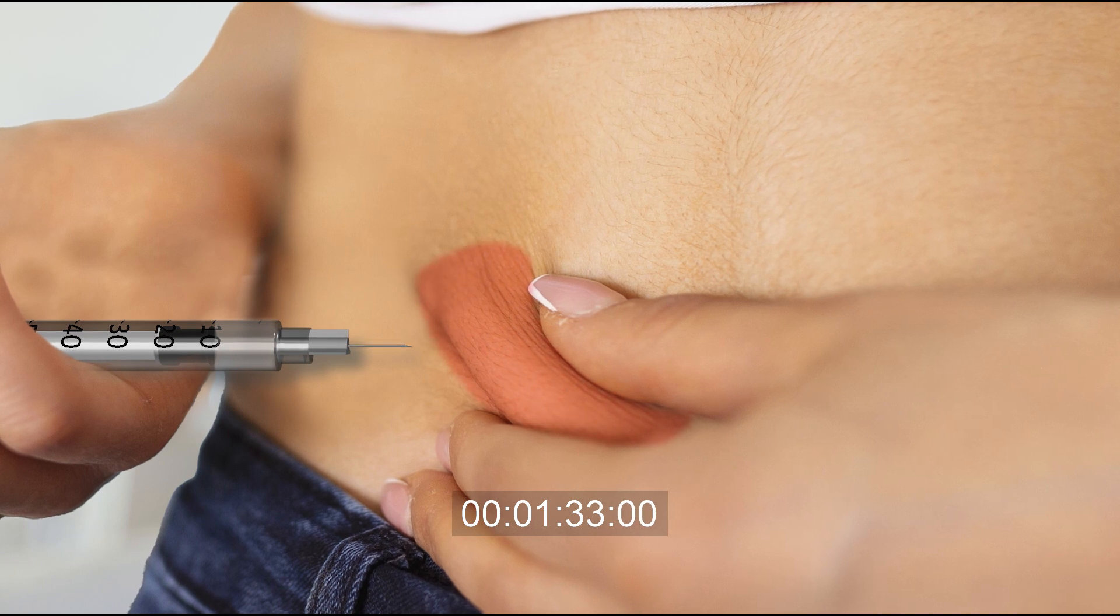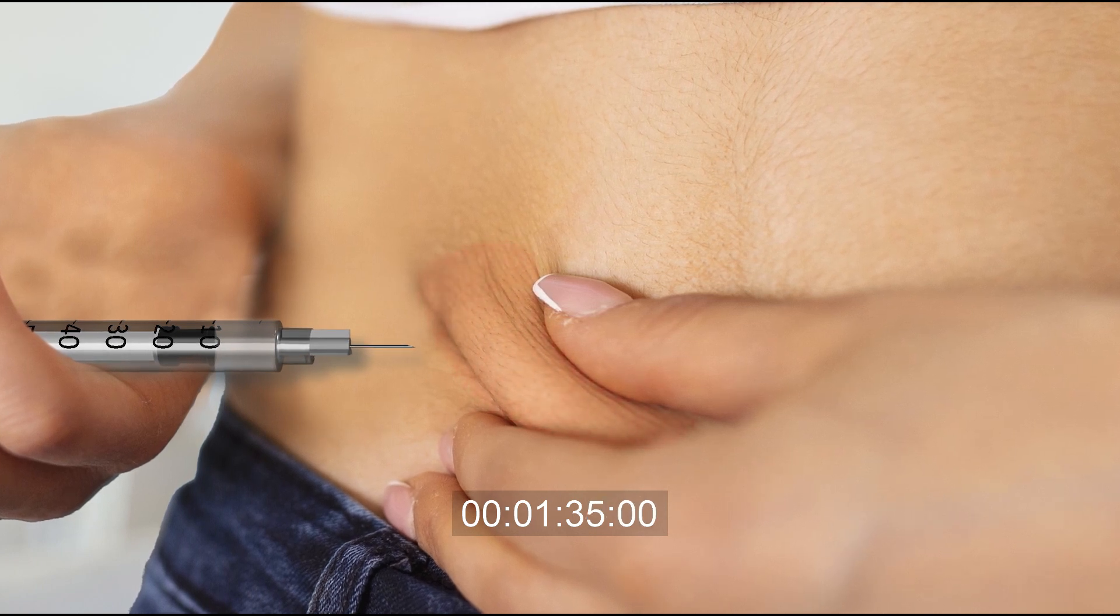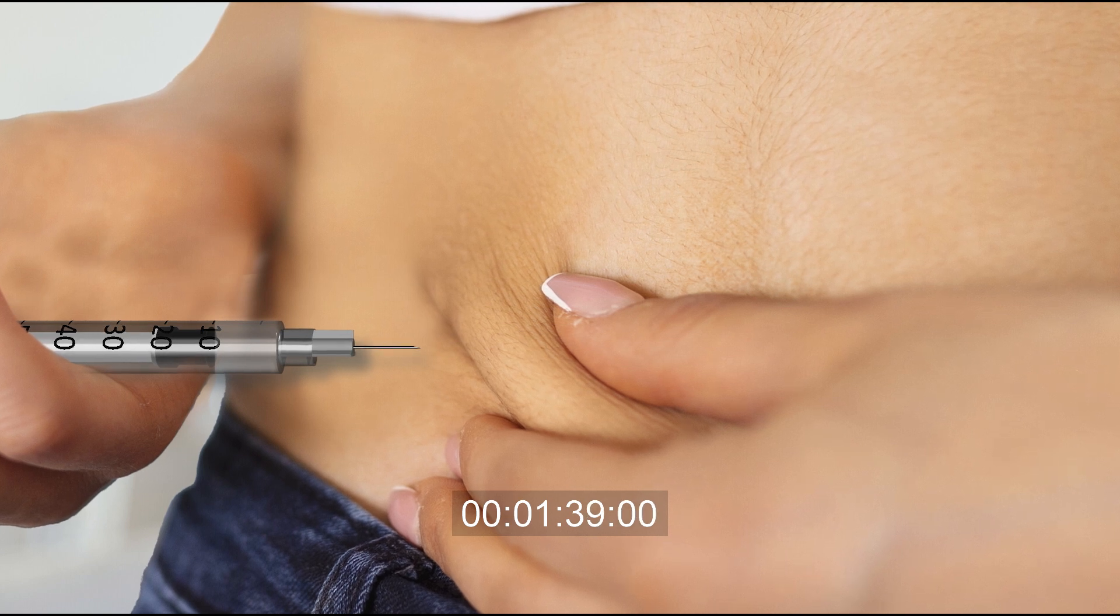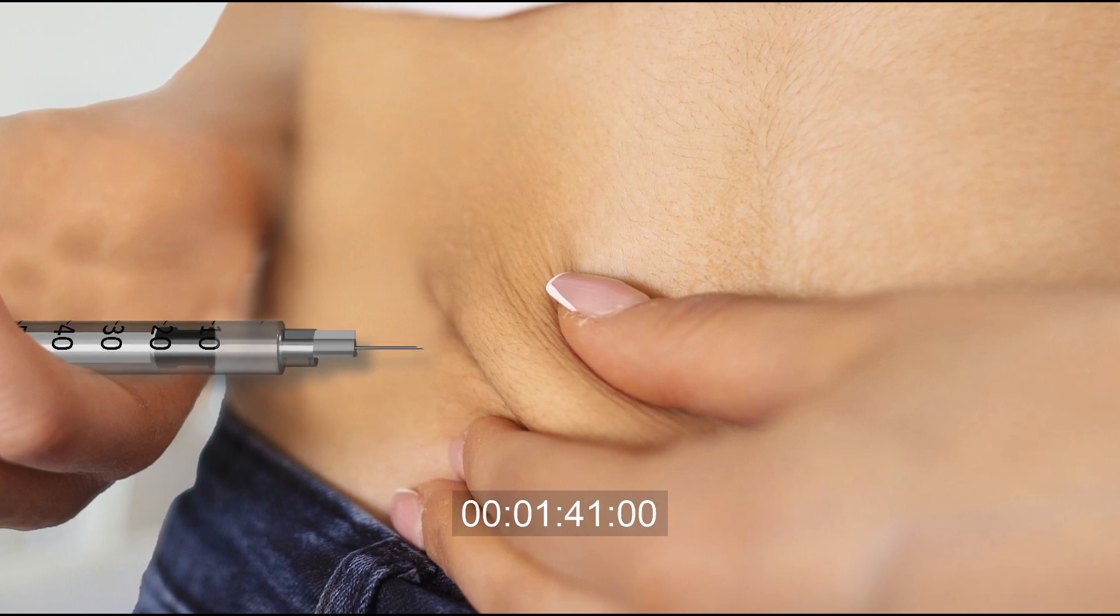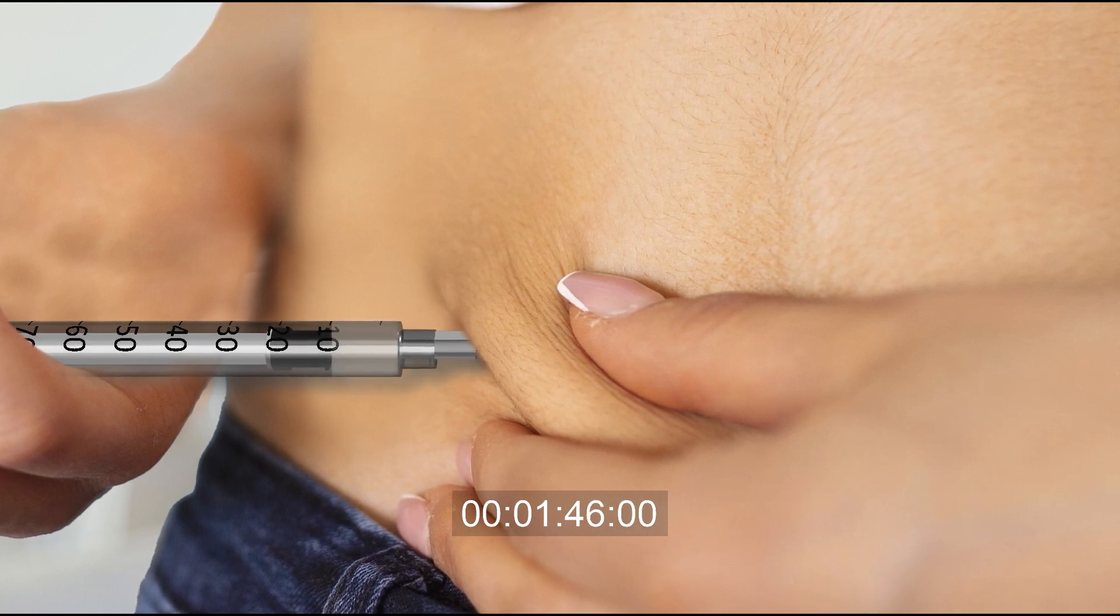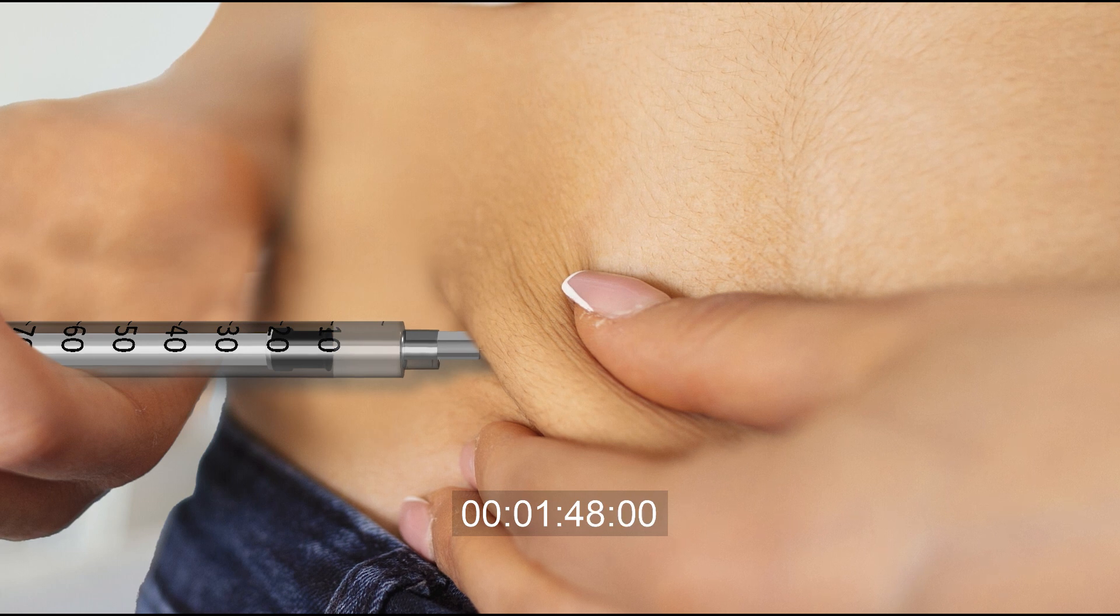Pinch a fold of your skin between your thumb and finger. With your other hand, hold the syringe like a pencil. At a 90 degree angle to your skin, insert the needle with one quick motion. Make sure that needle is all the way in.